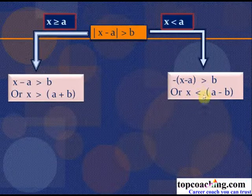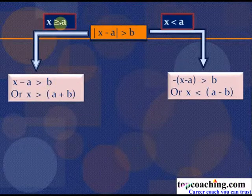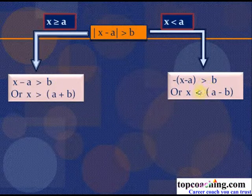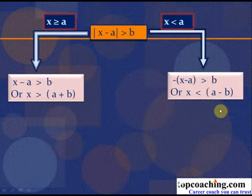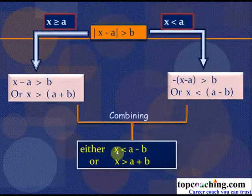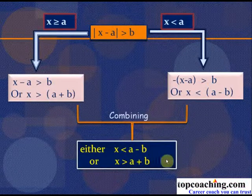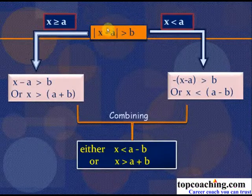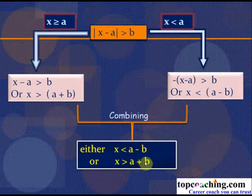From the second case, −(x − a) > p gives x < a − p. Combining both cases: either x < a − p or x > a + p. So for |x − a| > p, the solution is x < a − p or x > a + p.